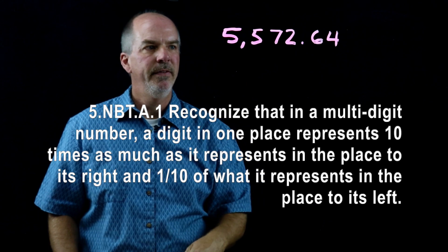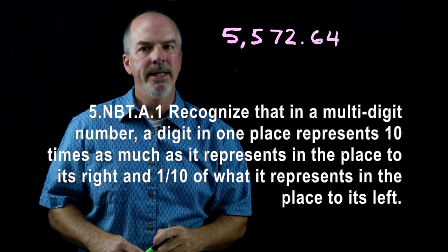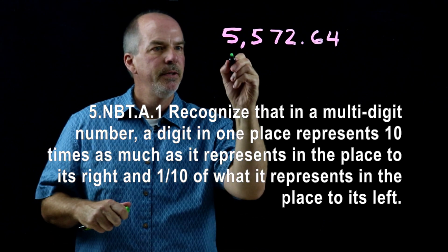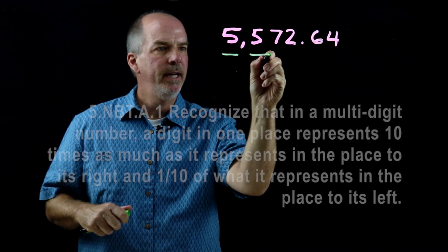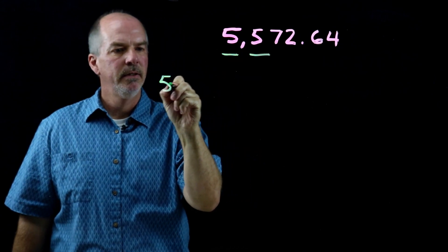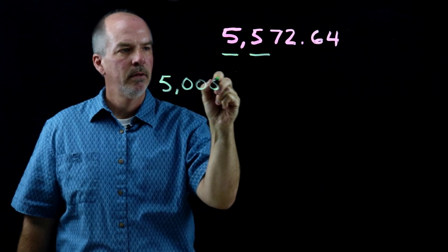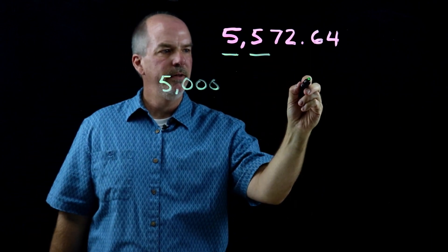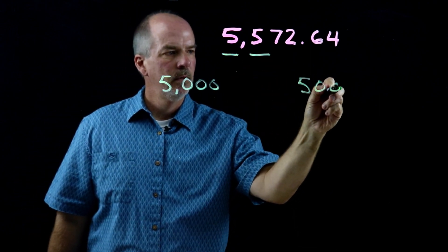Let's compare the fives in five-thousand, five-hundred seventy-two, and sixty-four hundredths. So we're comparing the five and the five. The value of this five is five-thousand, and the value of this five is five-hundred.